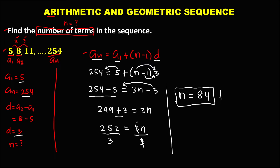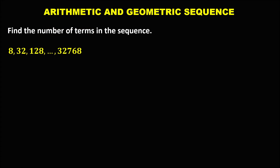For the next problem, find the number of terms. Observe that this sequence is a geometric sequence because there is no common difference. Using the geometric sequence formula: a sub n equals a sub 1 times the common ratio to the power n minus 1. From the given, a sub 1 is the first term, a sub 2 is the second term, and a sub n is the last term.